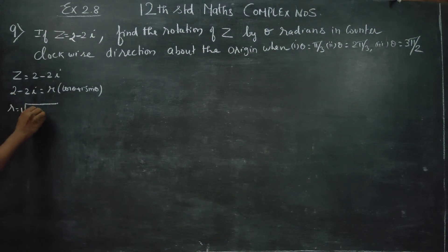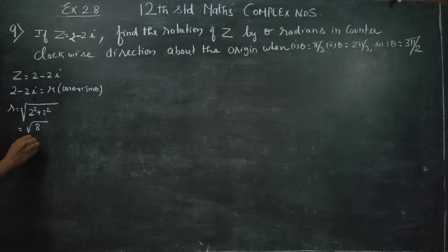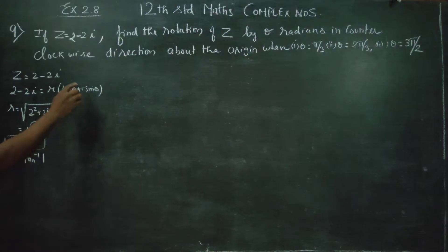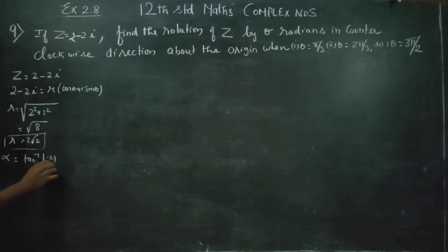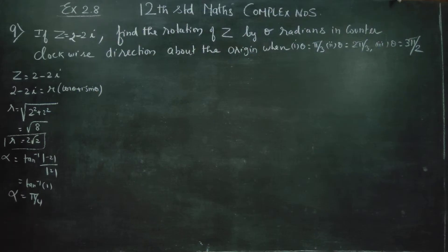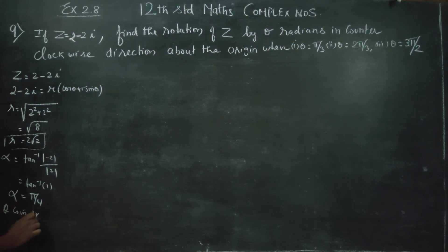r is equal to the modulus: square root of a² + b². For 2² + 2², your answer will be √8, which equals 2√2. This is my r. You have to find alpha. Alpha is equal to tan inverse of |b|/|a|, which is tan inverse of 1, giving the answer π/4. This is my alpha. Now, 2 minus 2i is in the fourth quadrant.